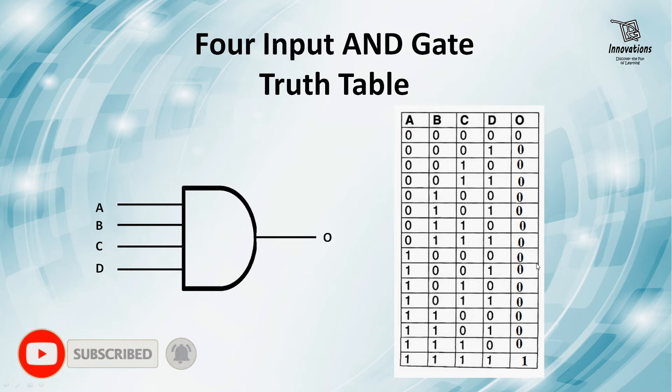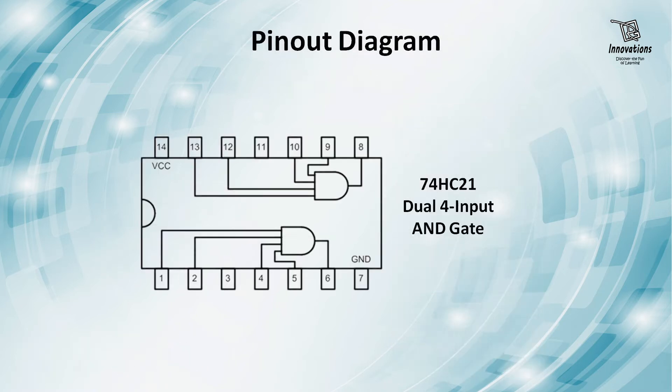Let's look at the pin-out diagram of the 7421 IC with two AND gates. For AND gate 1, pins 1, 2, 4, and 5 are inputs and pin 6 is output. Pin 3 is no connection and pin 7 is ground. For AND gate 2, pins 9, 10, 12, and 13 are inputs and pin 8 is output. Pin 11 is no connection and pin 14 connects to positive power supply.